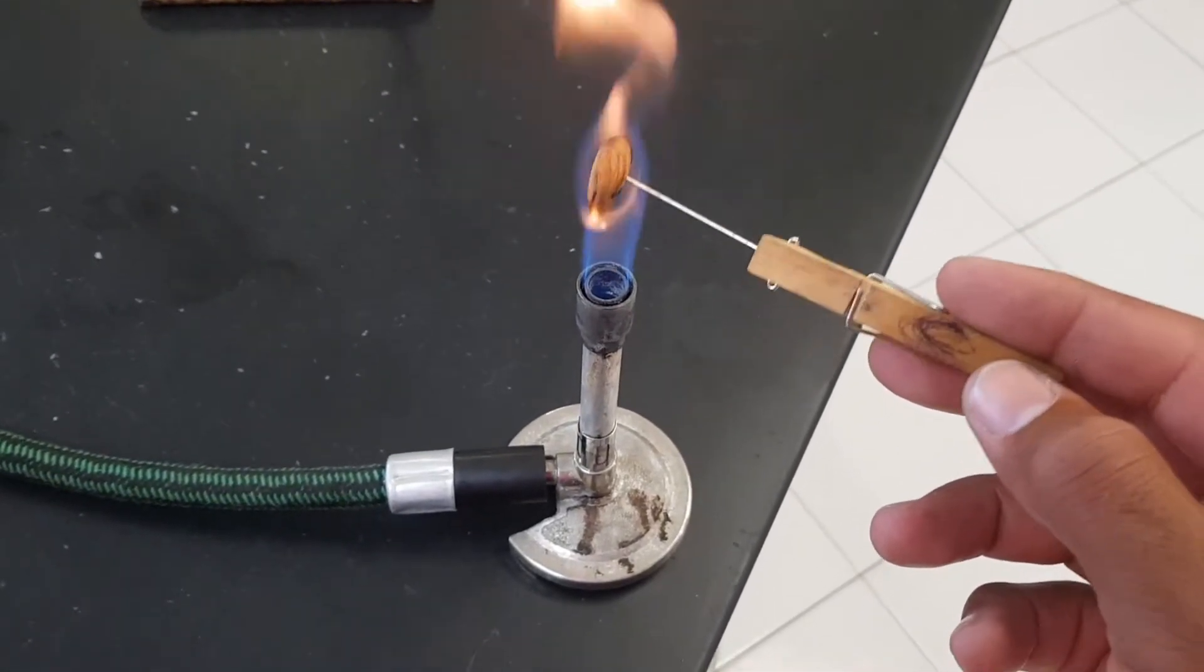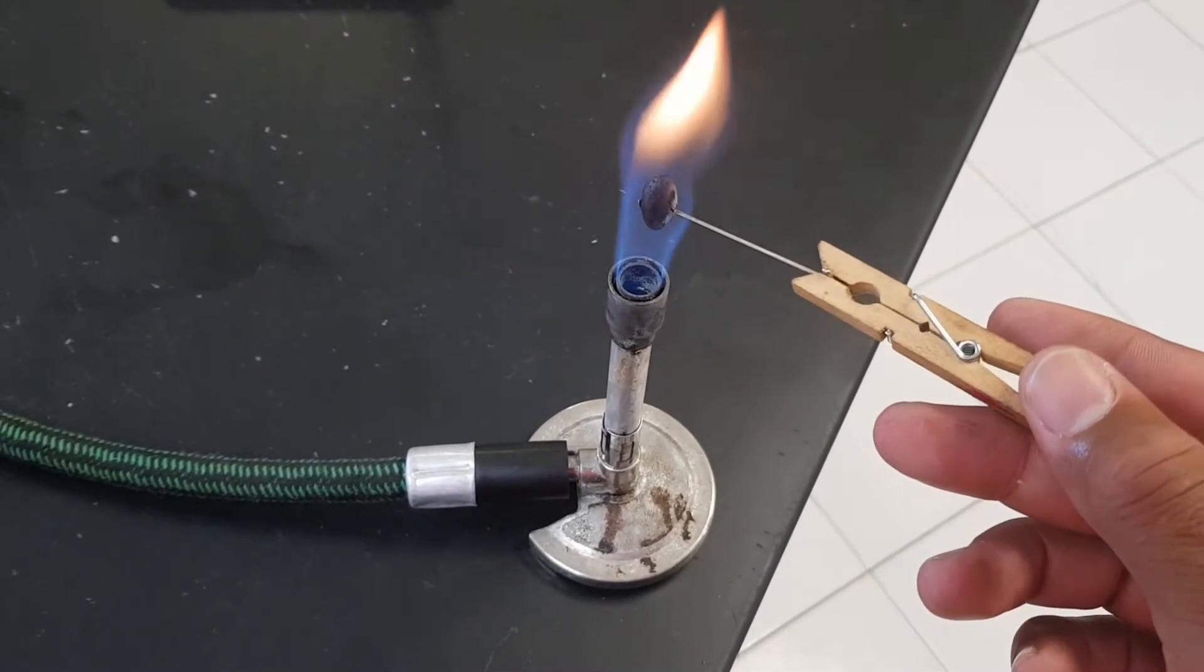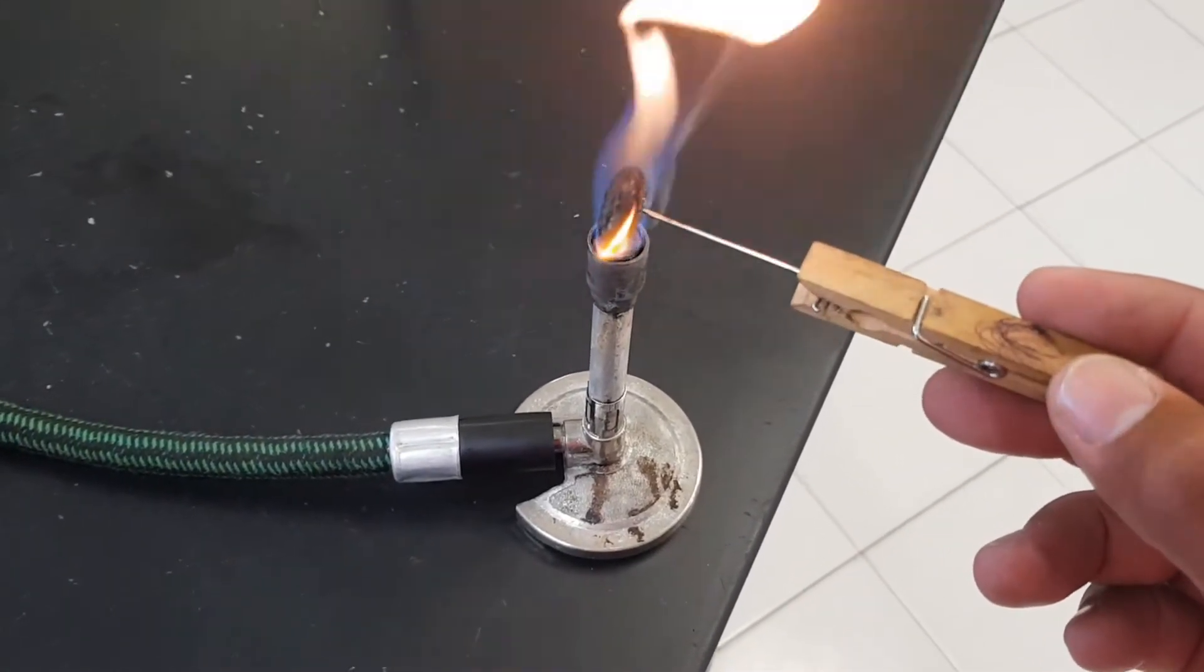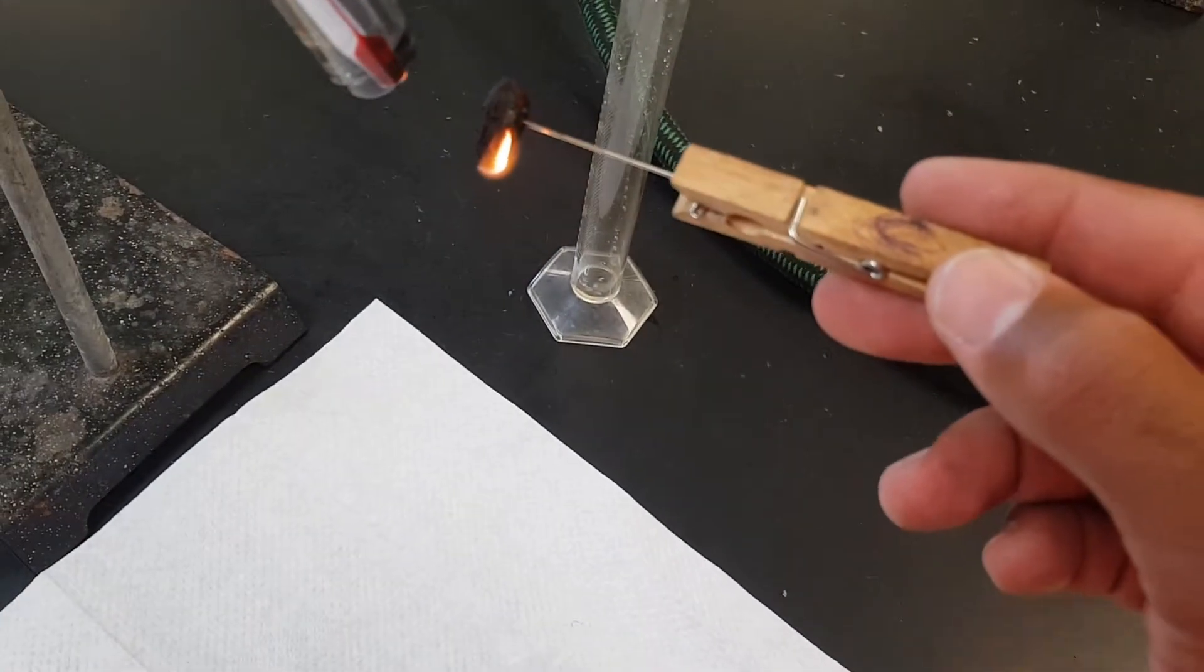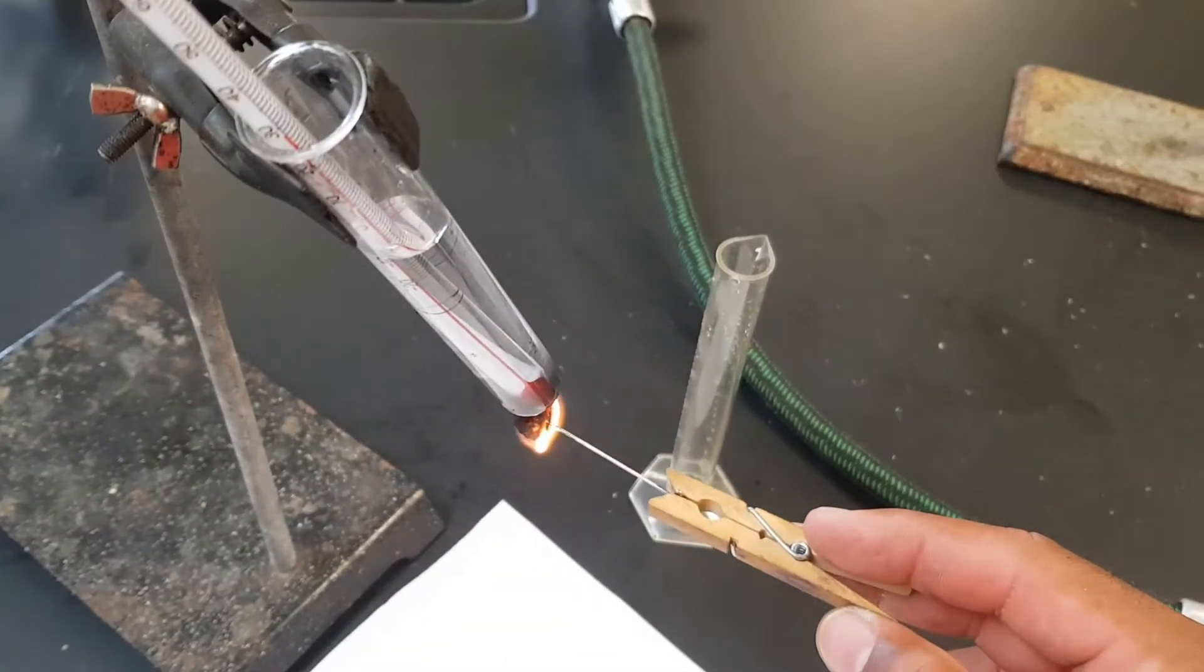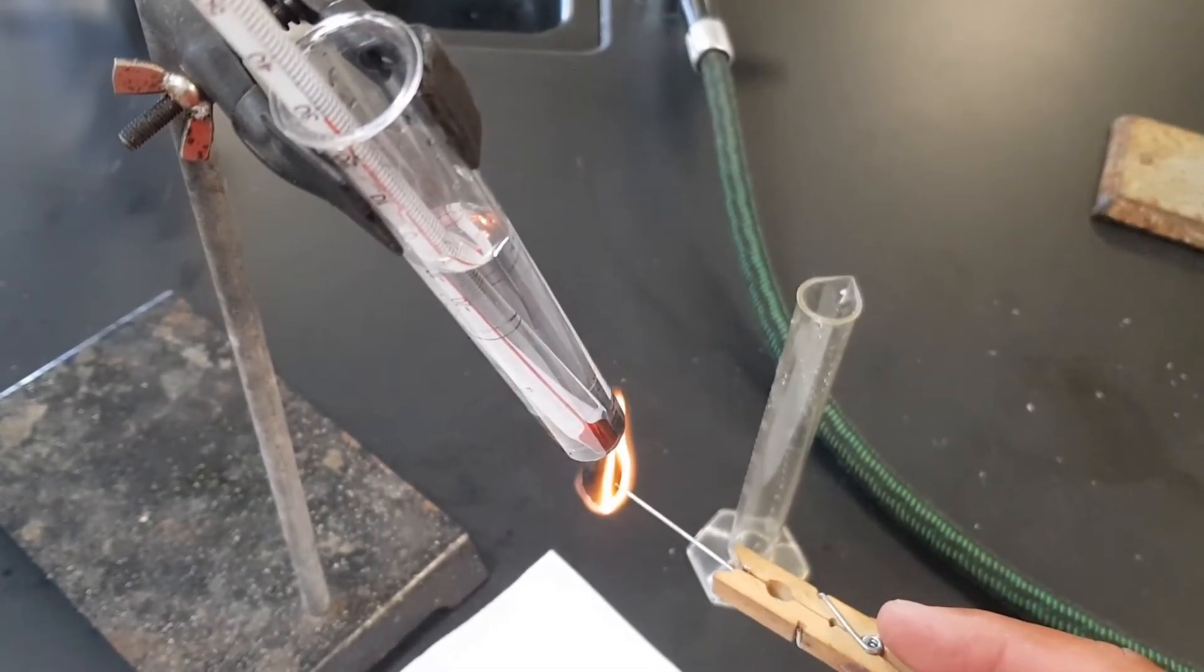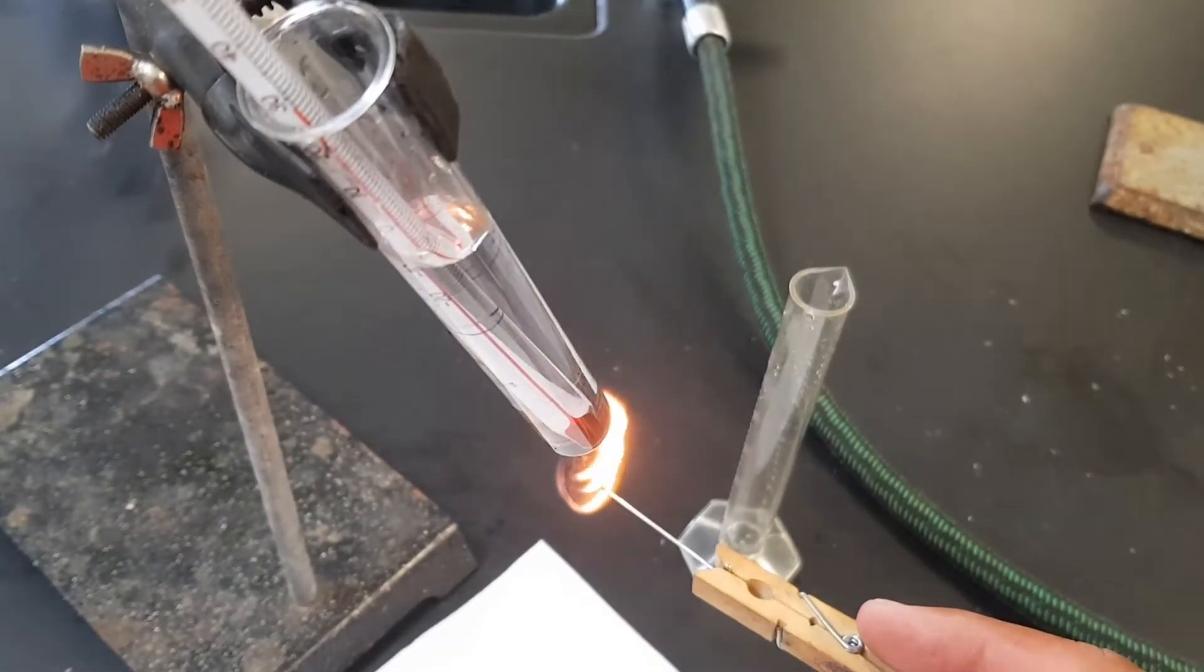So once the nut catches fire, you can put it under your test tube. You want to make sure you maintain the distance of the nut on your test tube. You're going to burn this nut until it is fully burnt out.